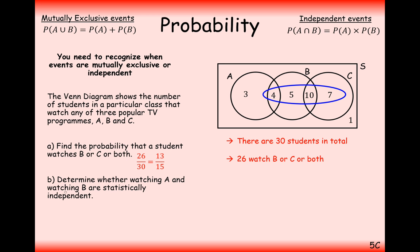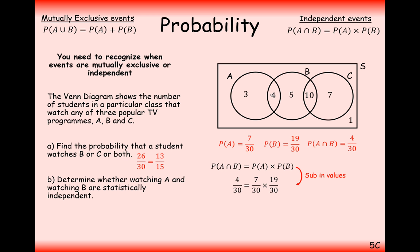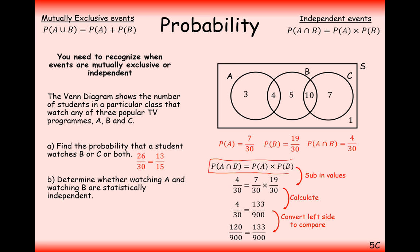To determine whether watching A and B are statistically independent, we check if P(A and B) = P(A) × P(B). The probability of A is 7/30 and the probability of B is 19/30. The actual intersection P(A and B) = 4/30, which equals 120/900. But P(A) × P(B) = 7/30 × 19/30 = 133/900. Since 133/900 ≠ 120/900, the two sides are not equal, so A and B are not independent.